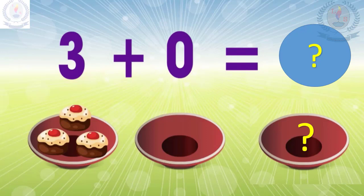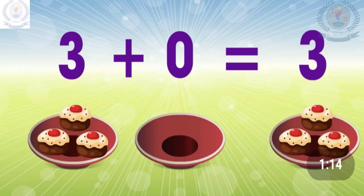Let's see another example. There are three cakes in the first plate. No cakes in the second plate, or zero cakes in the second plate. Now children, tell me how many cakes in both plates altogether. The answer is three. Three plus zero equals three.